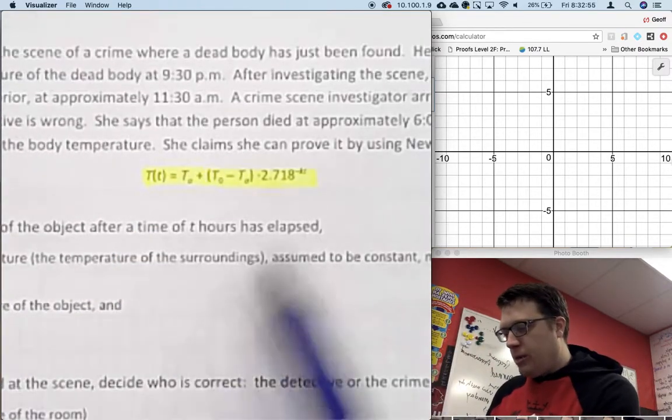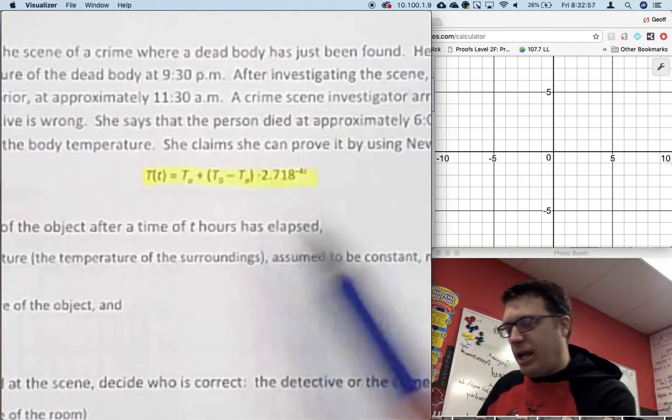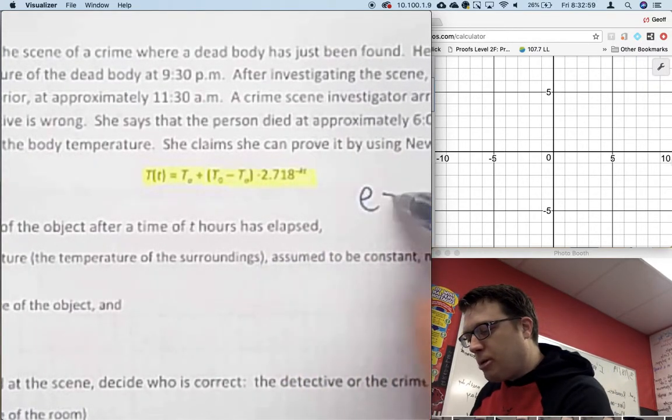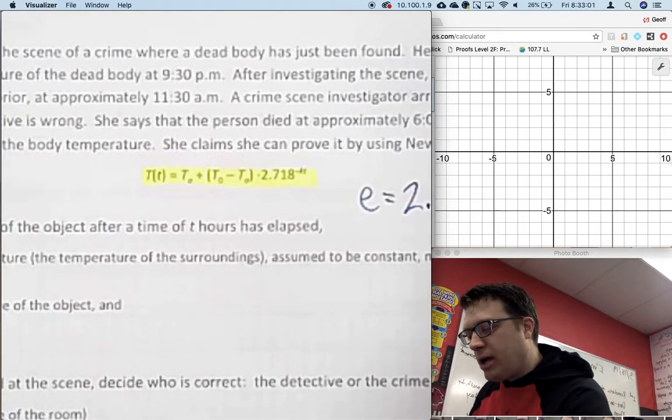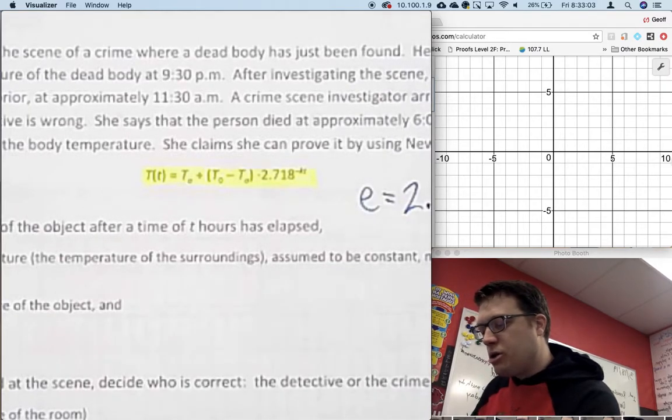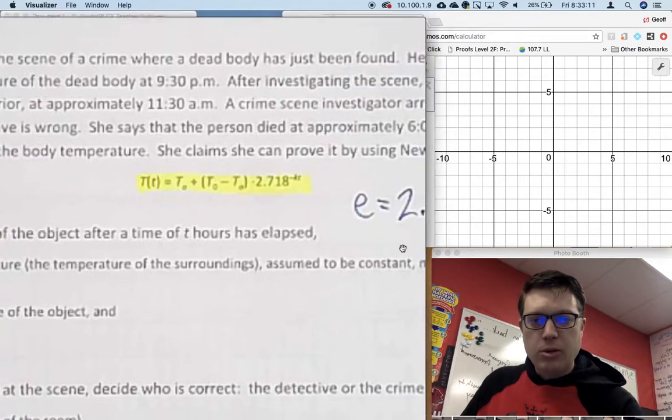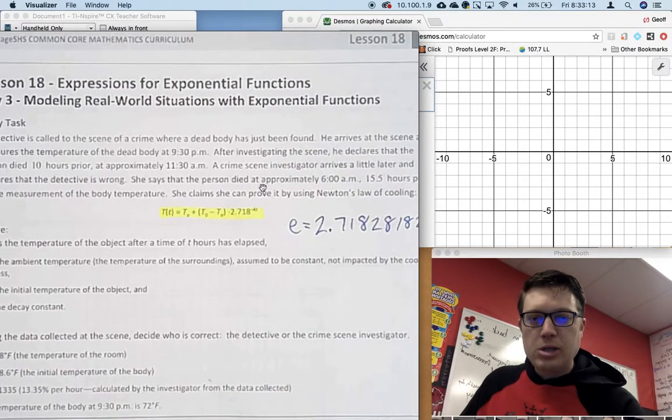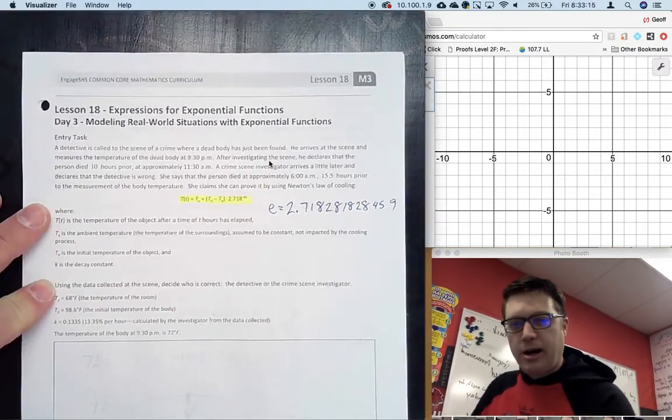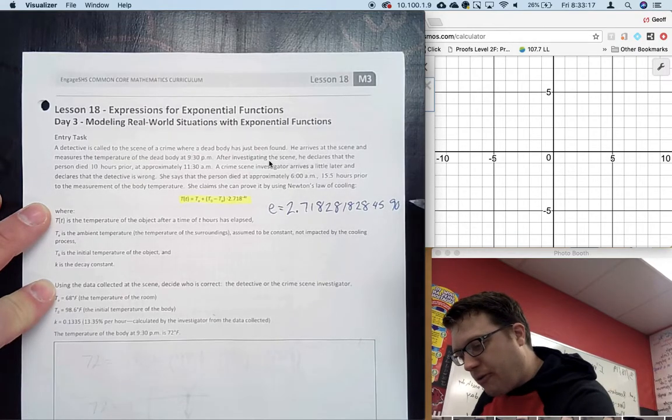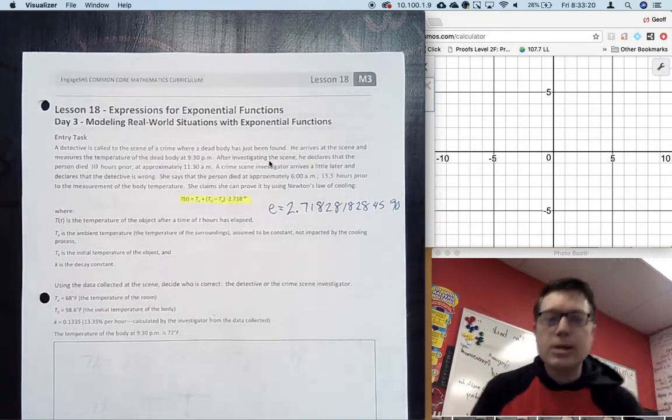Then we have this number, 2.718. This number is actually known as Euler's number, and it's 2.718281828459045... It continues on.